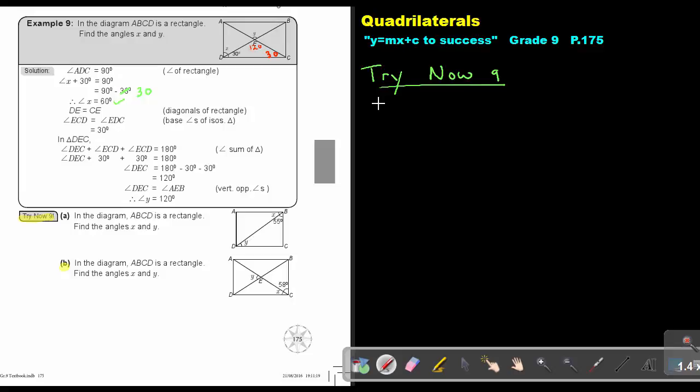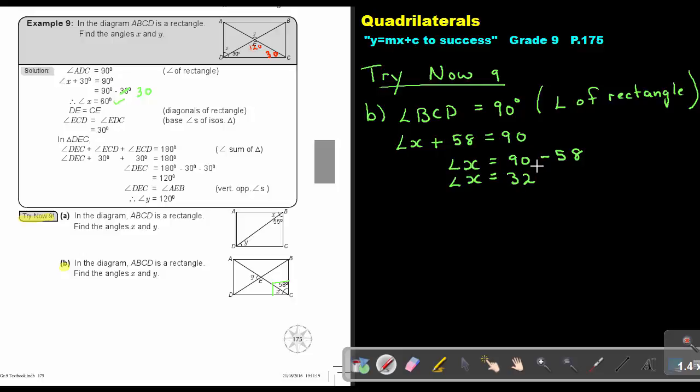So we can start by saying, this is number B. Angle BCD, let's just mark it, this angle, will be equal to 90 degrees. It's an angle of a rectangle. Then I can say that angle X plus that 58 in this 90 degree angle, that is 90. And then to find angle X, I can say 90 minus 58, and that's going to give me an answer of angle X is going to be 32 degrees.